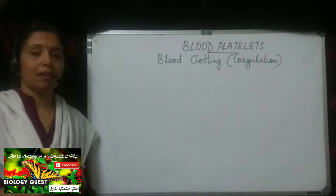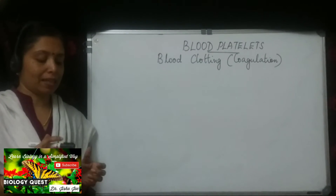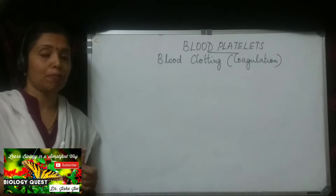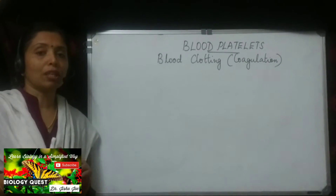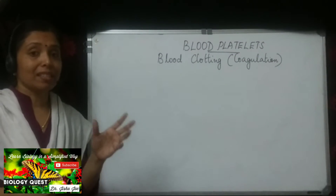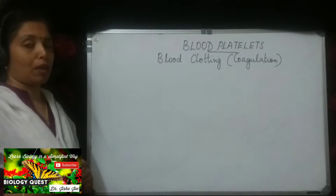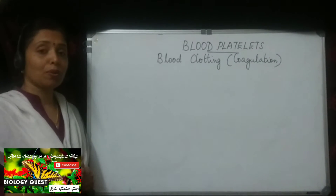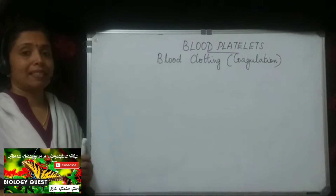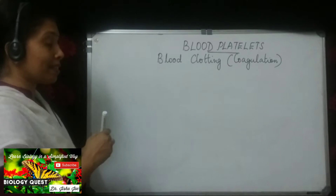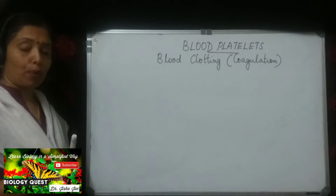Clot formation takes place to prevent the excessive loss of blood from our body and also to prevent the entry of germs into our body through the open wound. At the region of injury or wound, the blood platelets disintegrate, producing a substance called thrombokinase.